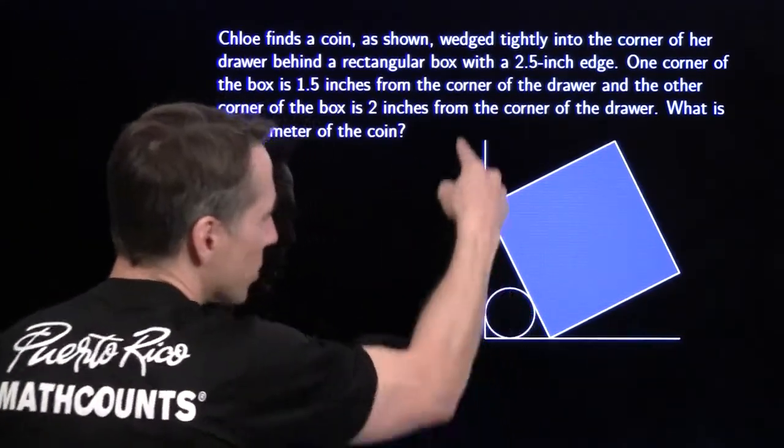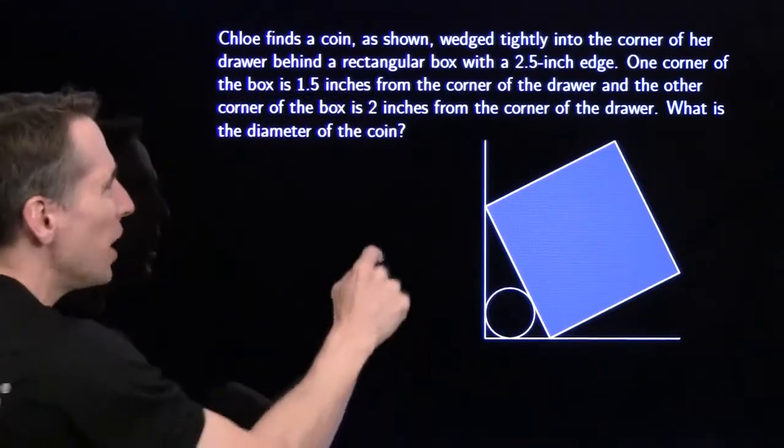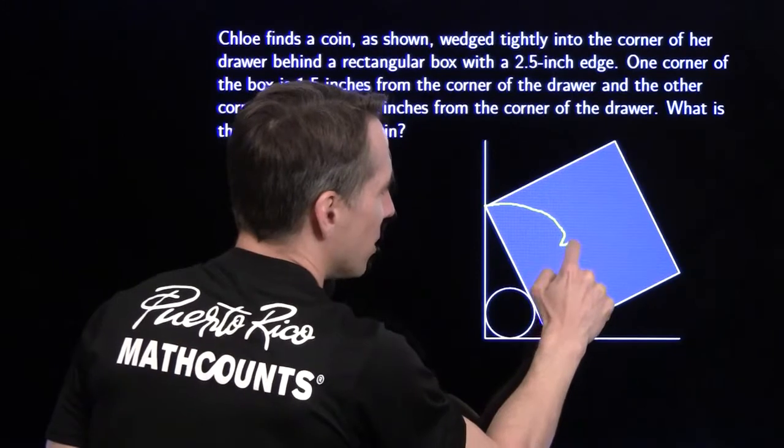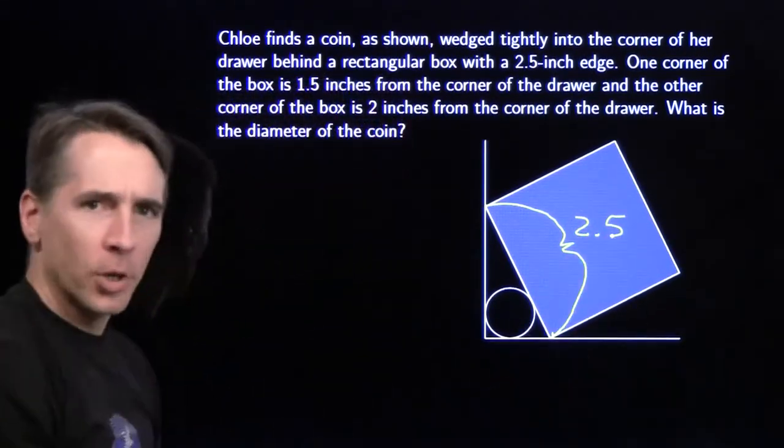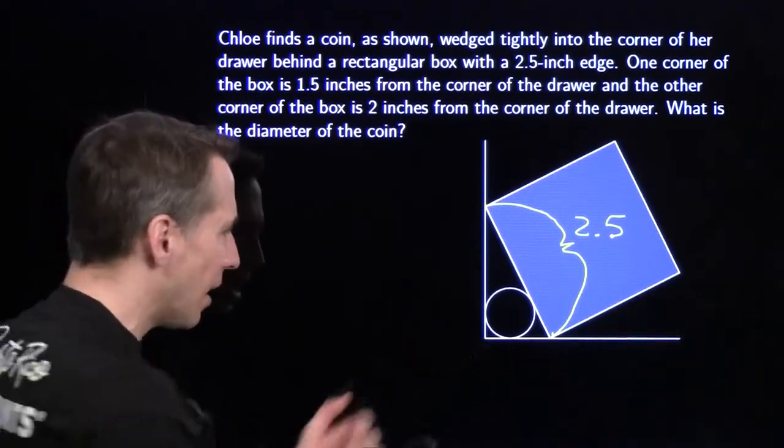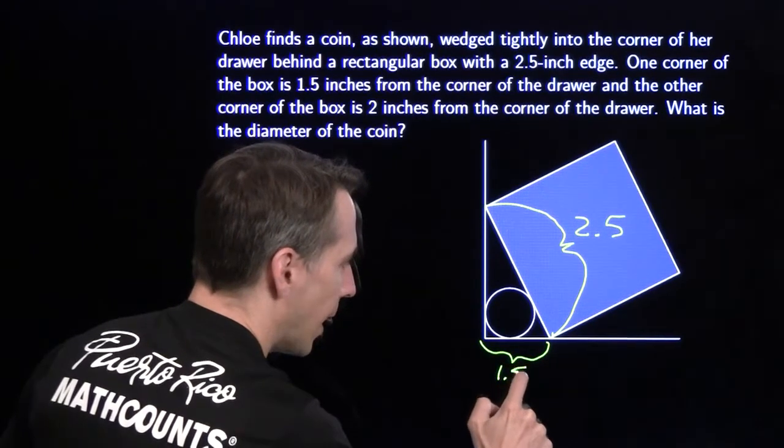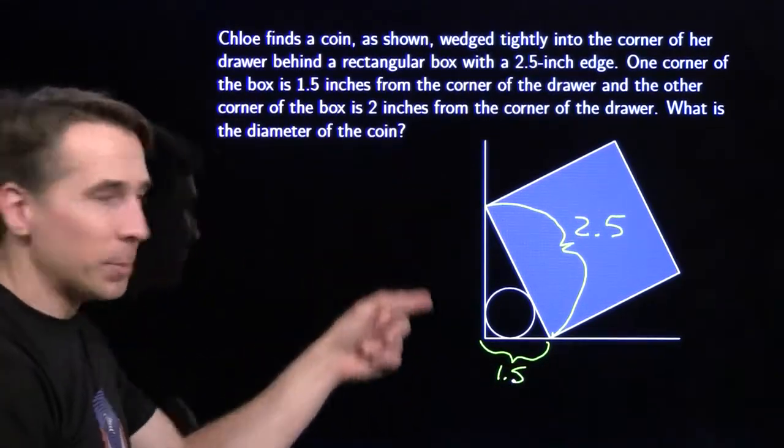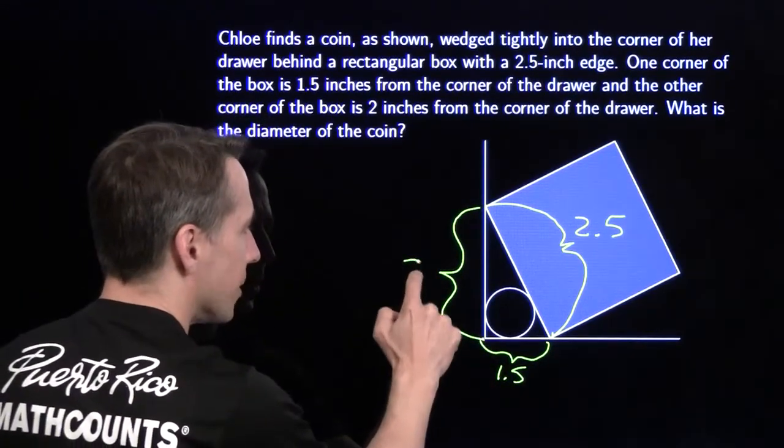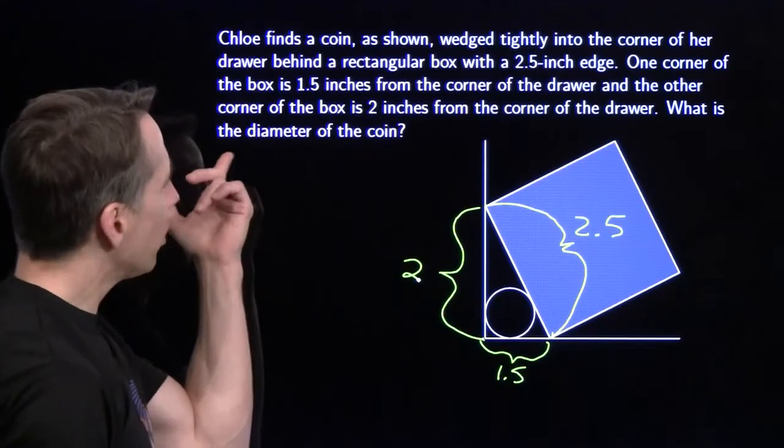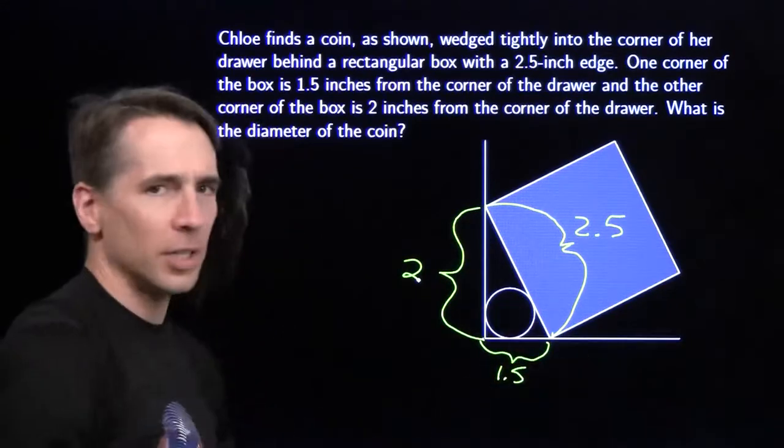Here we have a coin wedged in the corner of a drawer, and we have this rectangular box out here. It's got a two and a half inch edge, so this right here is two and a half. I have a circle here. It's tangent to a bunch of things out here.